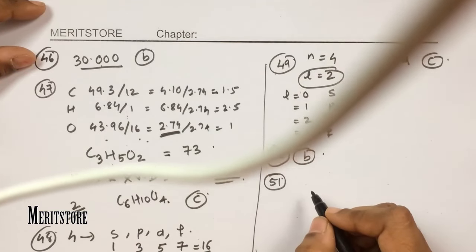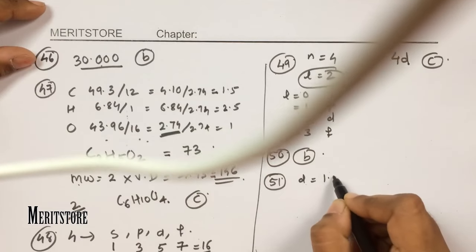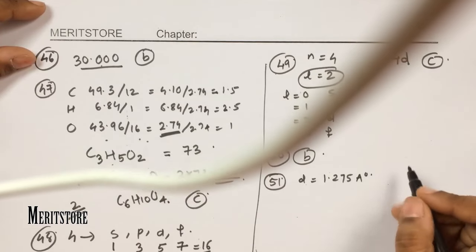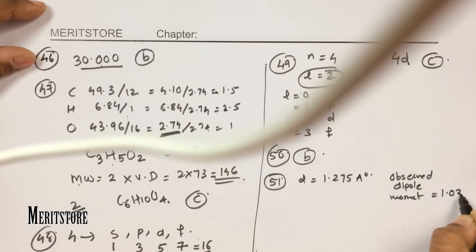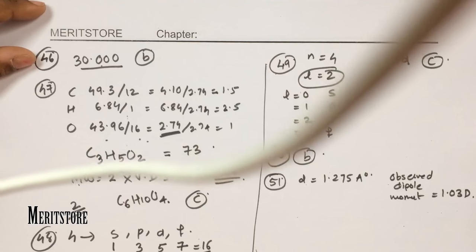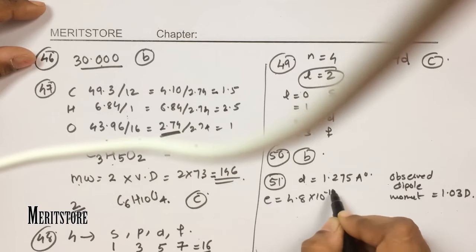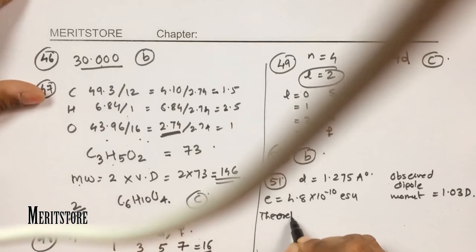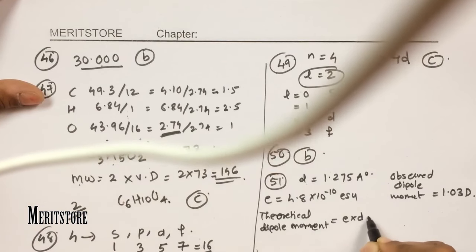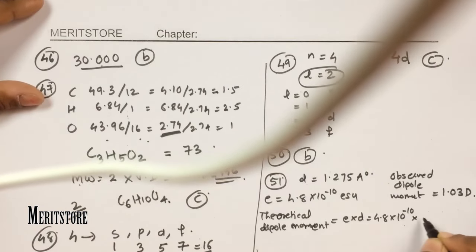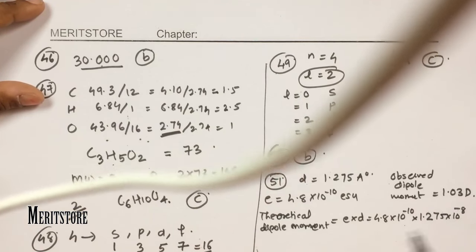Question number 51: the bond length of HCl is 1.275 Ångström. The observed dipole moment is 1.03 D. The charge on an electron is 4.8 × 10⁻¹⁰ ESU. To calculate the theoretical dipole moment: μ = e × d = 4.8 × 10⁻¹⁰ × 1.275 × 10⁻⁸ cm, which gives 6.12 × 10⁻¹⁸ ESU = 6.12 D.